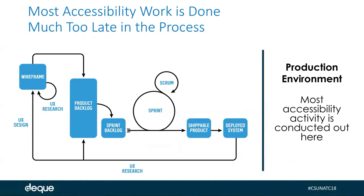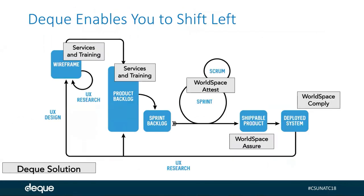At Deque, when we talk about accessibility and what we try to evangelize in the community, making accessibility more sustainable means integrating that process into the development life cycle. Looking at the same agile diagram, we can inject accessibility testing and thinking about accessibility inclusion at almost all facets of the development process — designing wireframes with accessibility in mind, developing and testing mid-sprint, and during QA.